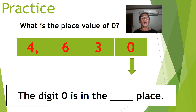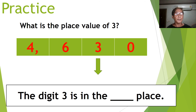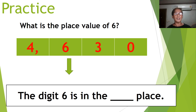Let's have a practice. For four thousand six hundred and thirty, what is the place value of zero? The digit zero is in the ones place. What is the place value of three? The digit three is in the tens place. What is the place value of six? The digit six is in the hundreds place.